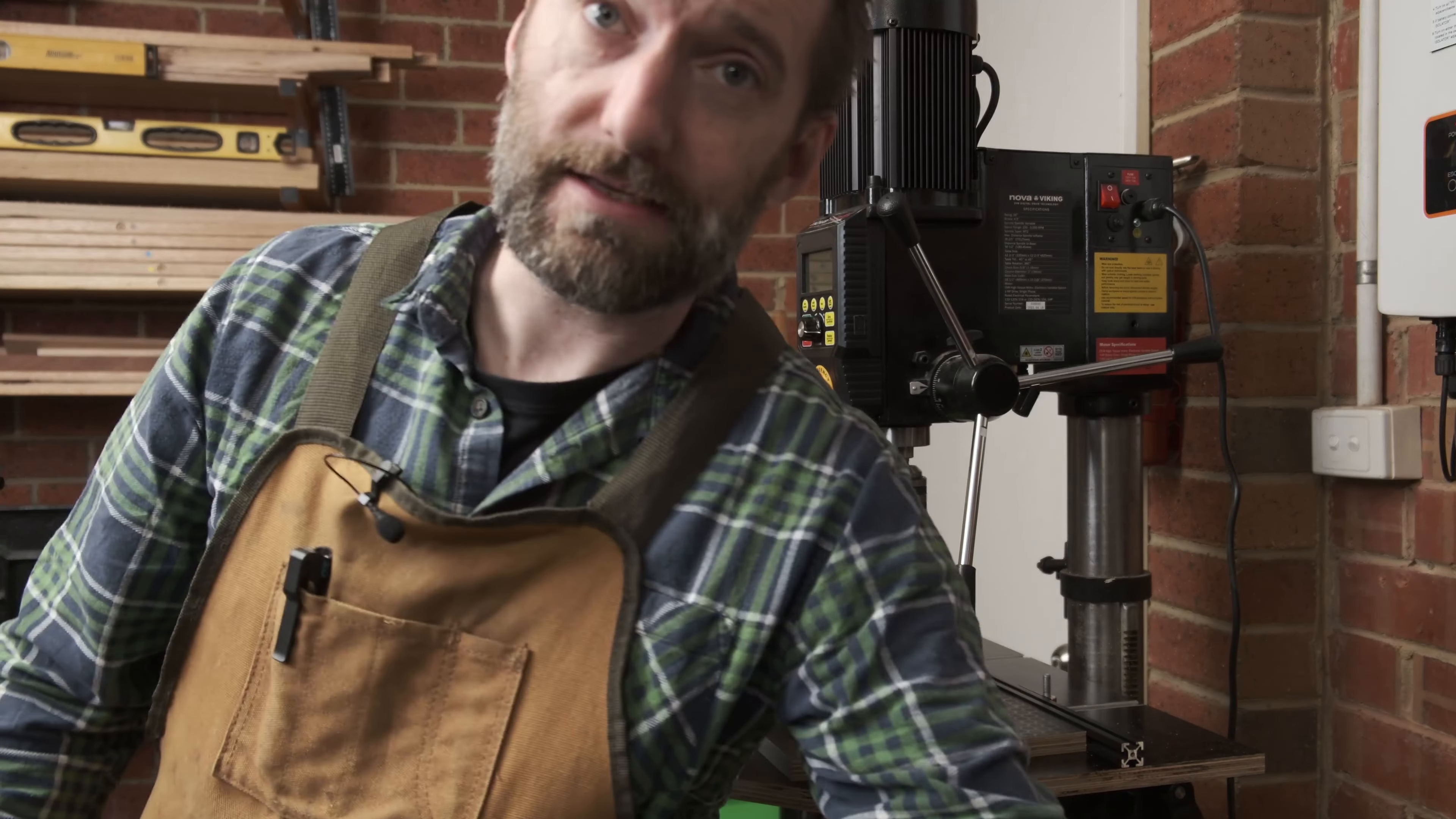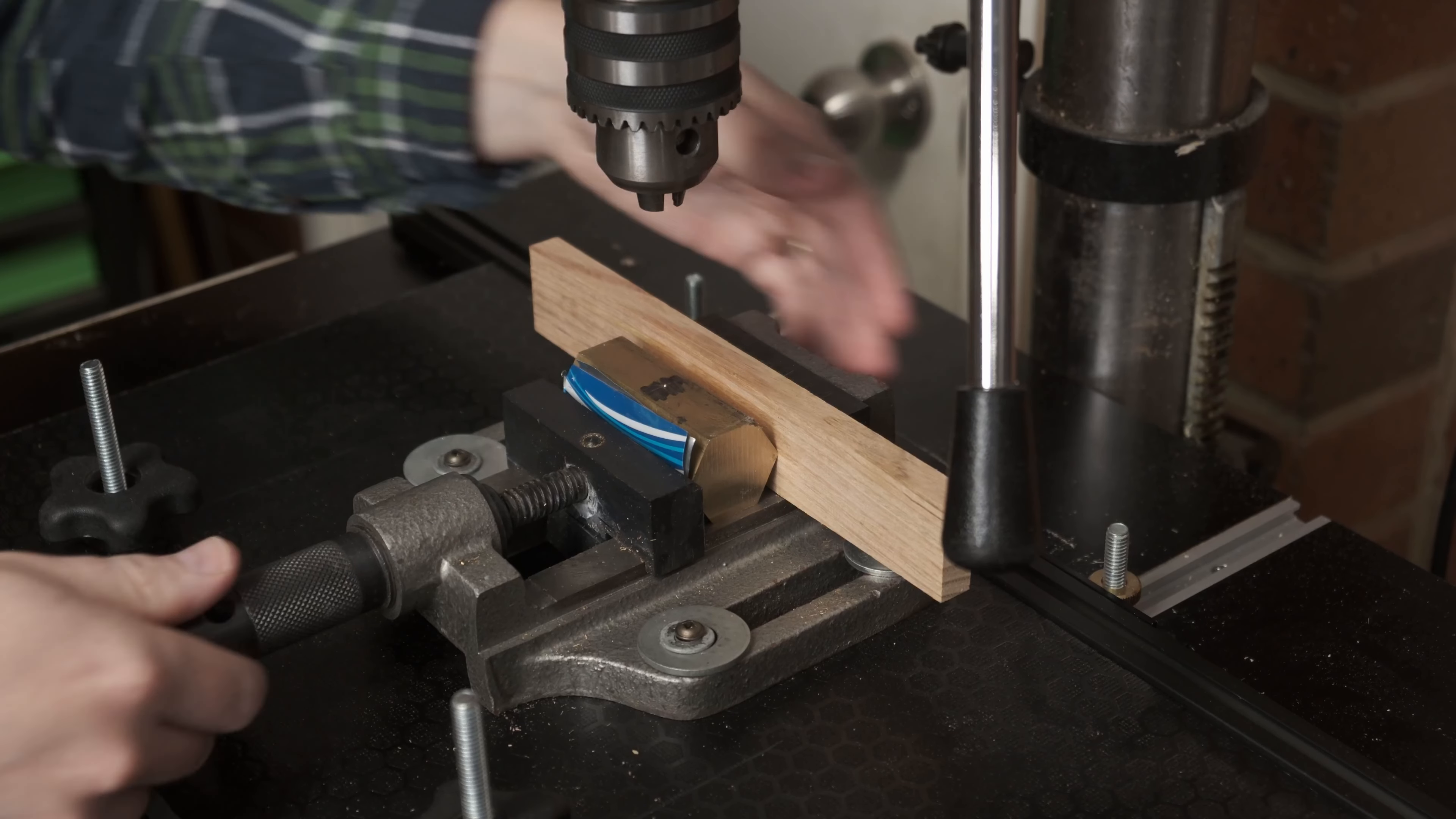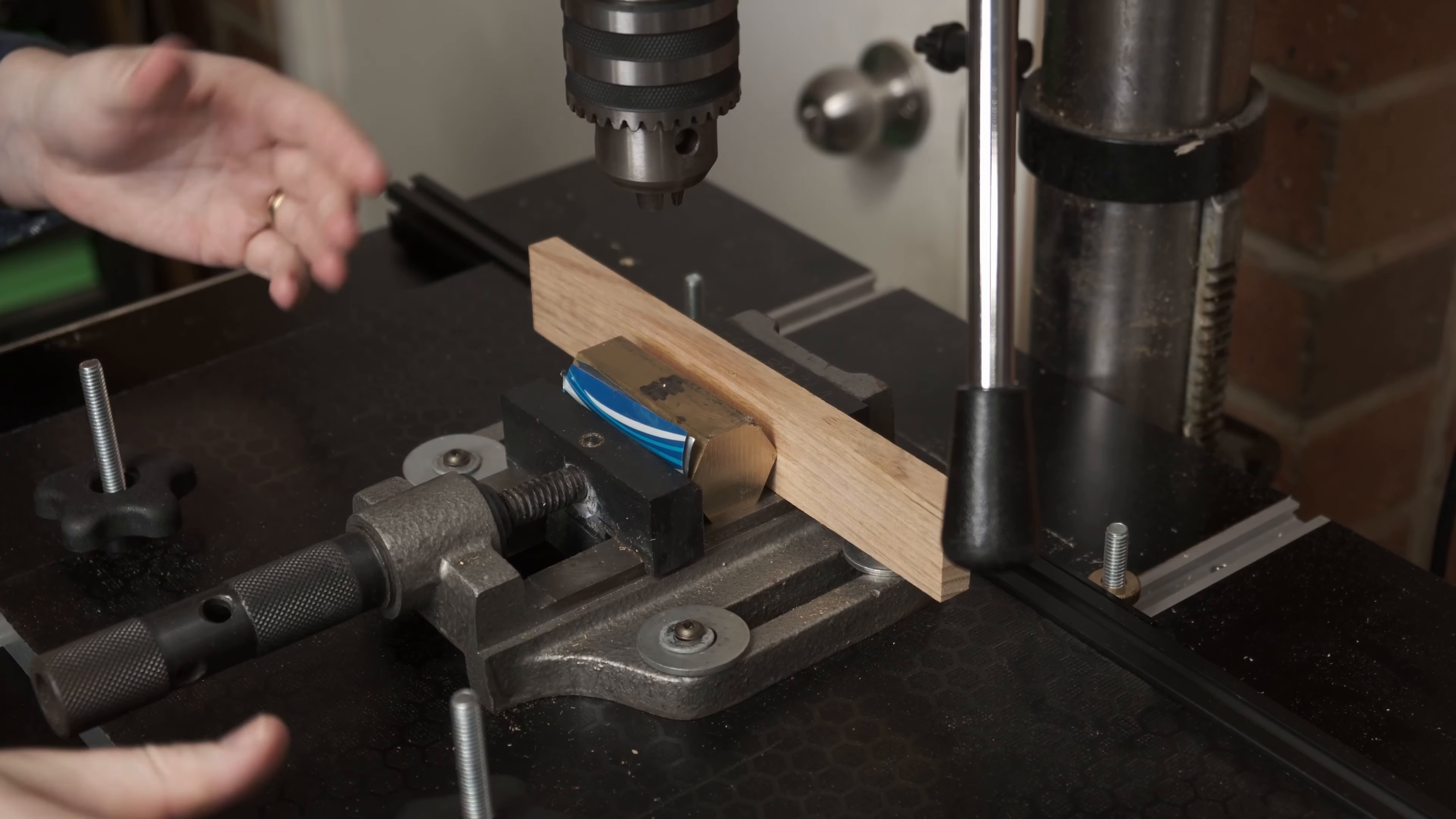This is a little bit easier than using the hold downs to hold the metal vise. You combine that with the fence and it's a really secure thing. It's got no way to rotate because it's got the fence locking it down. It's got the bolts locking it down.